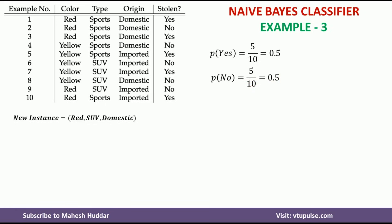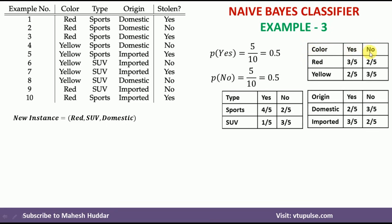Once we calculate the prior probabilities, we need to calculate the conditional probabilities of all three attributes: color, type, and origin. For the color attribute, I have written the attribute name with its two possible values. We need to know how many yes examples and no examples there are — 5 yes and 5 no. Out of the 5 yes examples, how many times does red appear? And out of the 5 no examples, how many times does red appear? Similarly, we count yellow across yes and no examples.